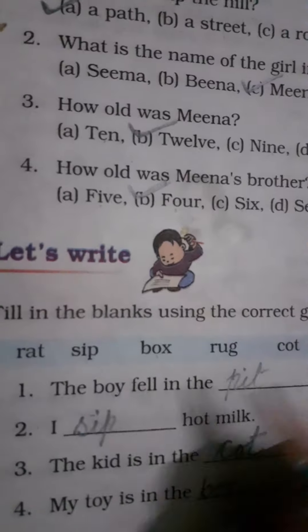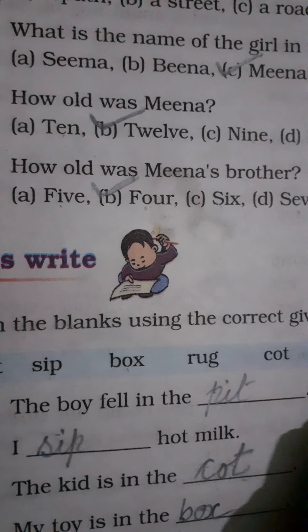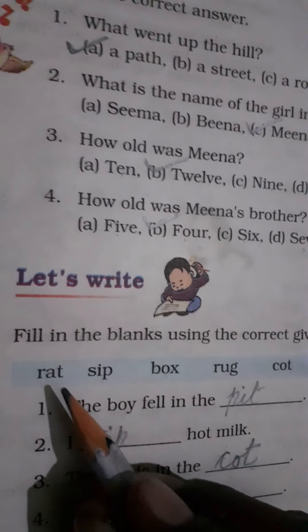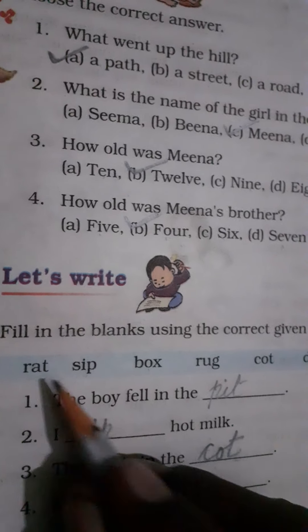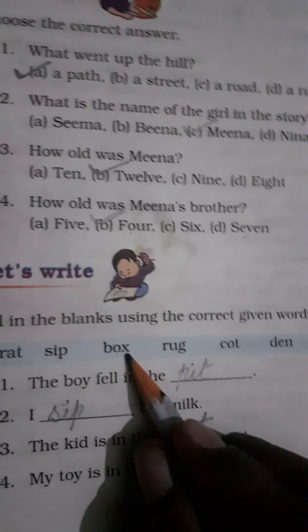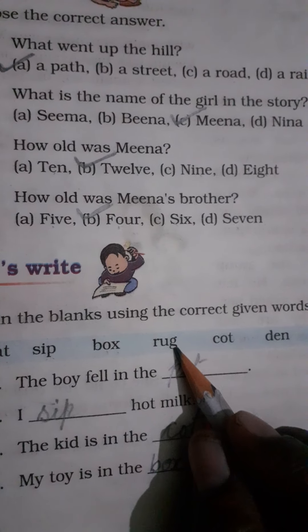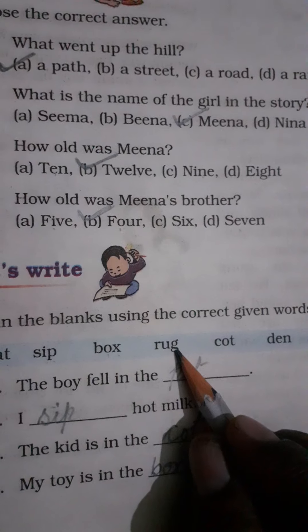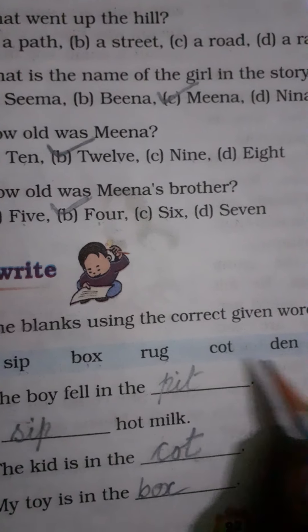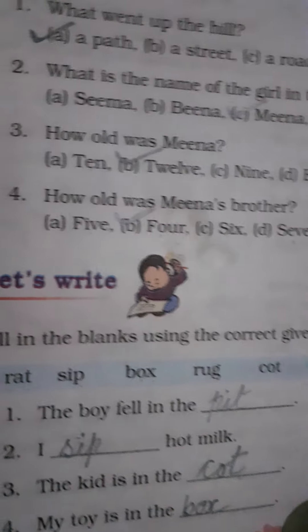Now, fill in the blanks using the correct given words. The given words are: rent, sip, box, rug — rug means carpet — caught, den, and pit.